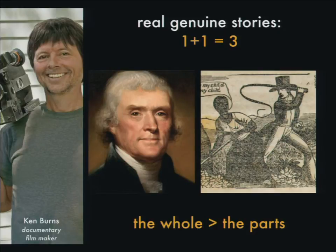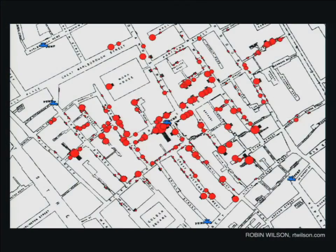This is similar to the Broad Street cholera map. You have one data set — here are all the deaths — and another data set — here are all the water pumps — and I'm going to let you figure out what the connection is. Jon Snow had studied cholera for 10 years before finally being able to put this map together. He didn't use it as data visualization to prove to himself the link between bad water and cholera. He used it to show that linkage to public policy and governmental experts, to convince them to change how they handled public infrastructure in London.